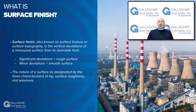Also known as surface topography or surface texture, surface finish refers to the vertical deviations of a measured surface from its desirable form. When there are significant deviations, the surface is considered rough. When there are minor deviations, the surface would be considered smooth.